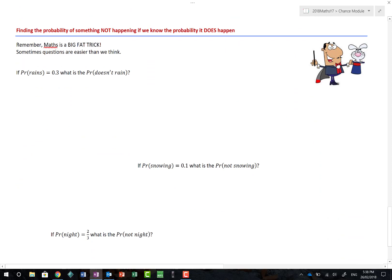Now, that word we used a moment ago, the word not, is actually really important in maths. Why? Because maths is a big, fat trick. And sometimes questions will be easier than we think. So if we actually know that there are two events, there are two outcomes for a particular probability, then we know that each probability, each of those probabilities, when added together, will always make the number one. Now, why is that? Well, remember, in probability, the number one means that it is certain. It is certain to happen.